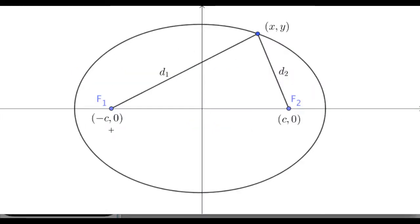Here's a picture of an ellipse. An ellipse is the set of all points in a plane such that when you add the distance from a point to the first focus and the distance from that point to the second focus, you always get the same number — the distance is constant. So what we really need to do is calculate distance one and distance two, add them up, and figure out what those are equal to.